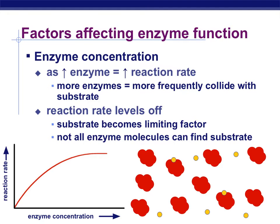Enzyme concentration can affect its function. As we increase the enzyme, we will also increase the reaction rate, because more enzymes are available to frequently collide with the substrate. As we increase the enzyme with more drops of our solution, the reaction rate increased. Eventually, the reaction rate is going to level off, and the substrate actually becomes a limiting factor — not all enzyme molecules can find the substrate to actually bind to.